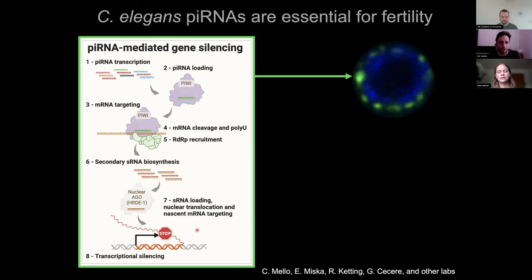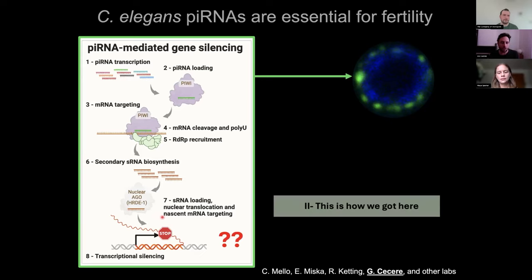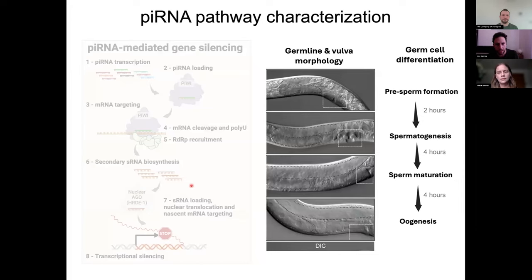Interestingly, mutations in components of the piRNA pathway in C. elegans cause very strong fertility defects that are independent of transposon upregulation. So one of the main questions I addressed during my postdoc in Germano Cechere's lab at Institut Pasteur was: how does piRNA regulation contribute to germ cell function?